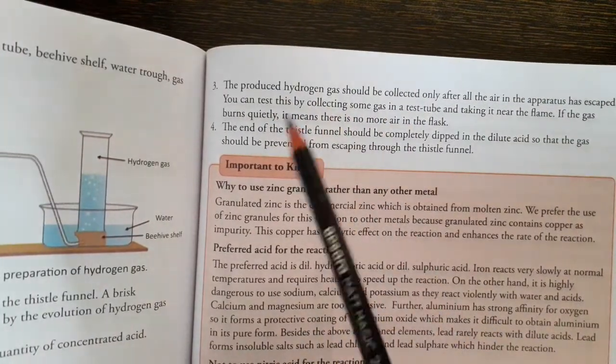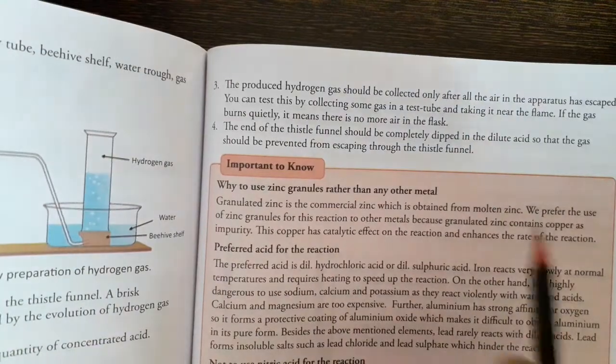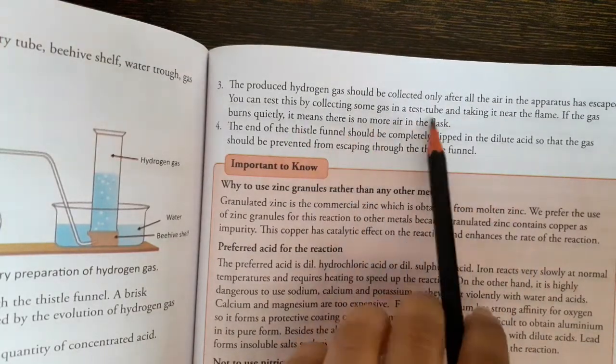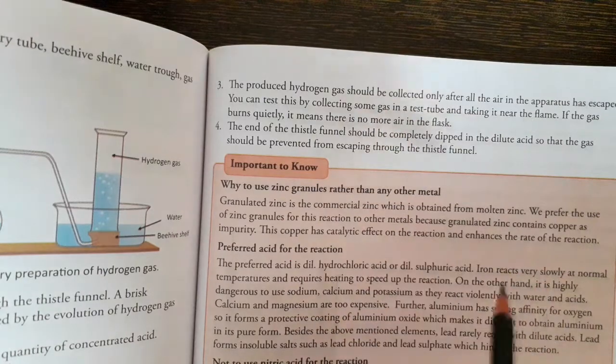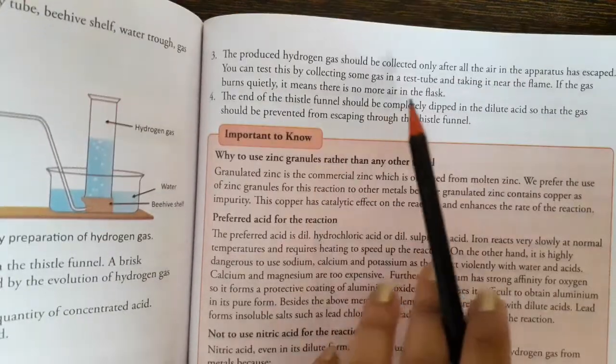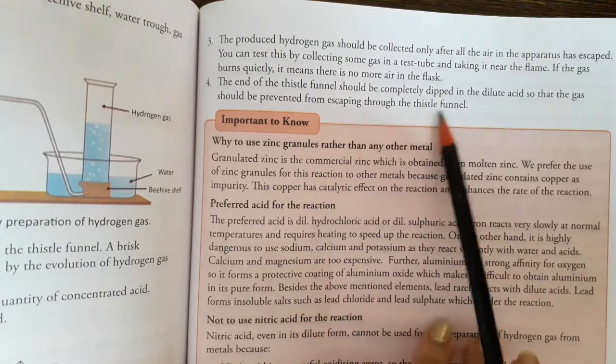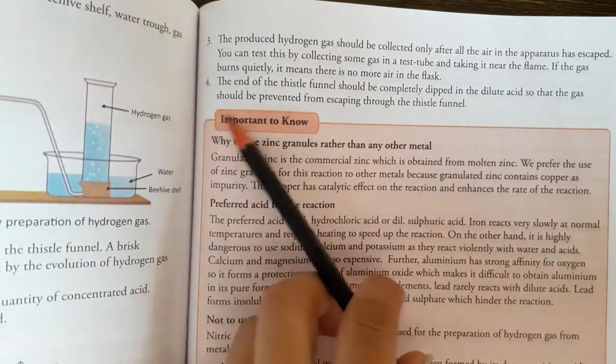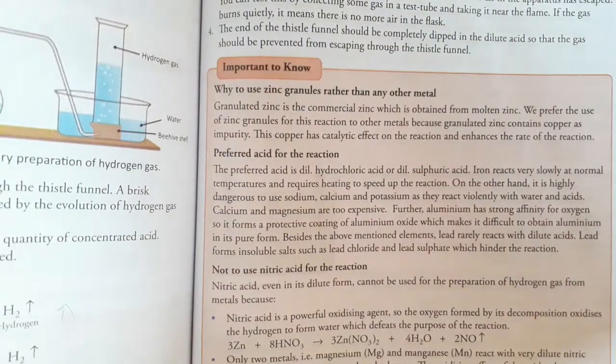The produced hydrogen gas should be collected only after all the air in the apparatus has escaped. You can test this by collecting some gas in a test tube and taking it near the flame. If the gas burns quietly, it means there is no more air in the flask. The end of the thistle funnel should be completely dipped into the dilute acid so that the gas is prevented from escaping through the thistle funnel. These are all the precautions.